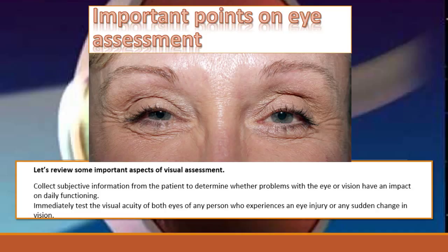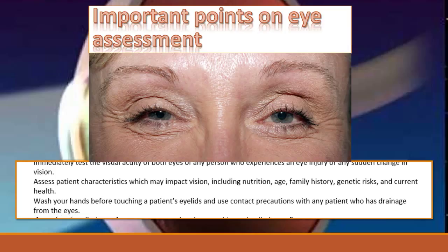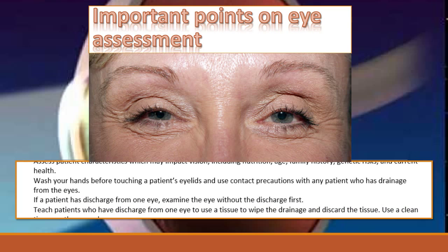Let us now review some important aspects of visual assessment. You want to collect subjective information from the patient to determine whether problems with the eye or vision have impact on daily functioning. You want to immediately test the visual acuity of both eyes of any person who experiences an eye injury or sudden change in vision. Assess patient characteristics which may impact vision, including nutrition, age, family history, genetic risks, and current health status. As a nurse, remember to wash your hands before touching a patient's eyelids and use contact precautions with any patient who has drainage from the eyes.